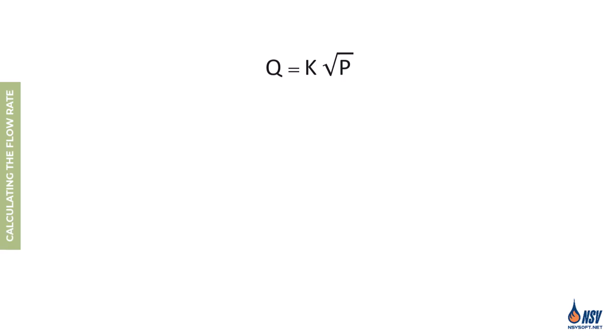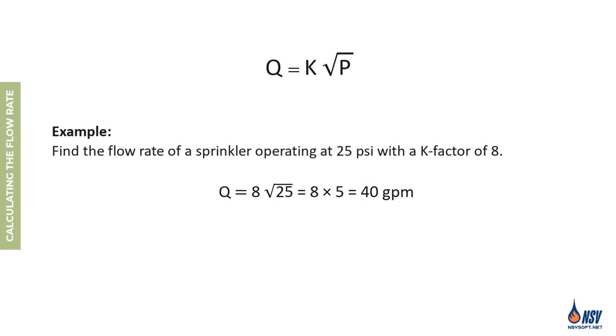In hydraulic calculations for fire sprinkler systems, we often encounter situations where the pressure and K factor of a sprinkler are known and we need to determine the discharge flow rate. For example, if the pressure behind the sprinkler is 25 psi and the K factor is 8, we can apply the formula Q = K × √P to find the flow rate.